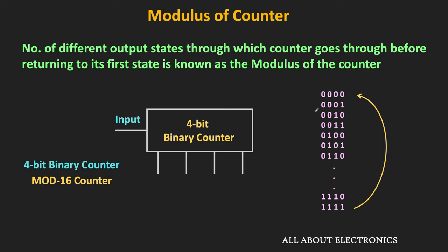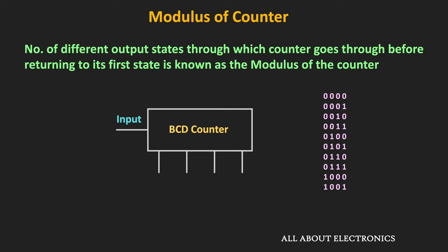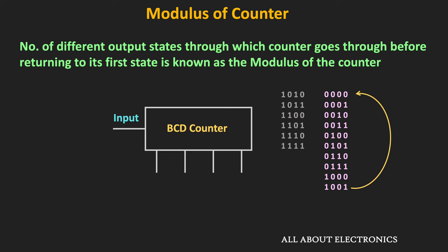Sometimes a counter does not utilize all the different possible output states, and in such cases the modulus of the counter can be less than the maximum possible value. For example, the maximum possible modulus for any 4-bit counter is 16. But if you look at the BCD counter, it counts from 0000 to 1001, meaning it has only 10 different output states — it is a mod-10 counter. So although the BCD counter is a 4-bit counter, it does not utilize all the possible output states.